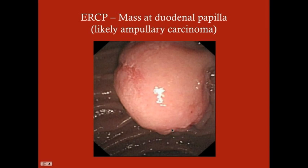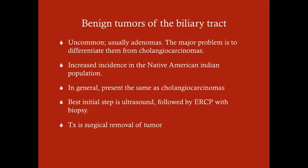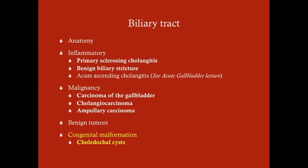Here is the duodenal papilla — the normal outlet of the ampulla of Vater via the sphincter of Oddi into the duodenum. This is how it looks normally, showing a puckering of tissue with the lumen visible. The second image from the same location shows an obvious tumor — that is not normal. Benign tumors of the biliary tract are uncommon — usually adenomas. The major challenge is differentiating them from cholangiocarcinoma, which is why biopsy is essential. They present the same way as cholangiocarcinomas with blockage, so the diagnostic protocol is the same: ultrasound, then ERCP with biopsy. The tumor should be removed even if benign, as it causes right upper quadrant pain and jaundice.